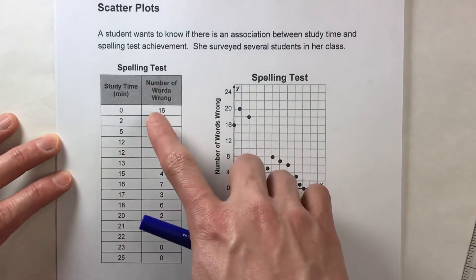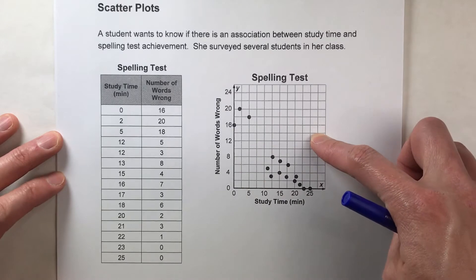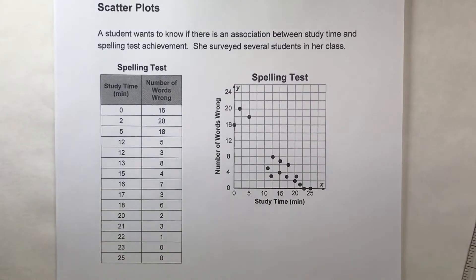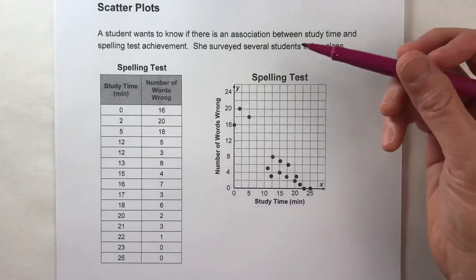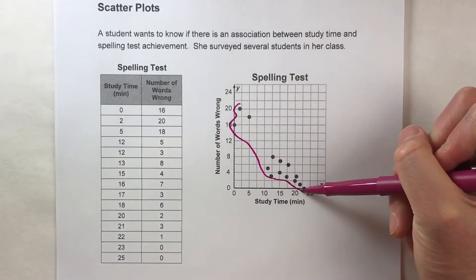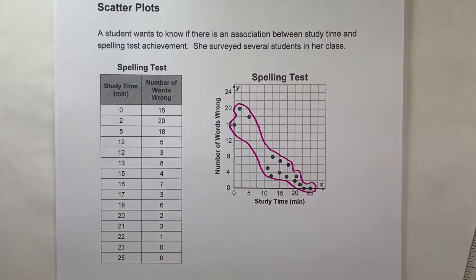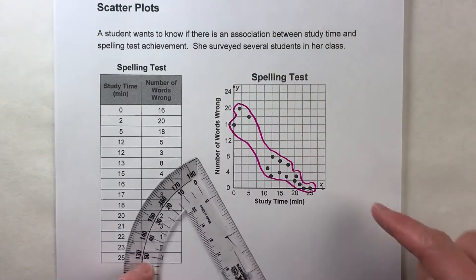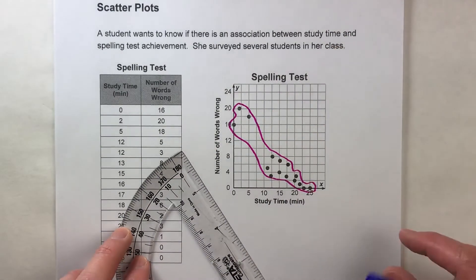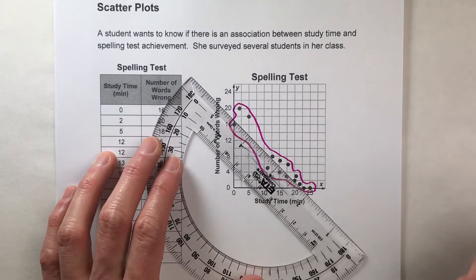We can take this data and plot it in a scatter plot. Now to see if there's an association, just like last time, we're going to see if we can draw a trend line. Just like before, I'm going to put an outline around the points so it's a little easier to imagine where that trend line is going to go.